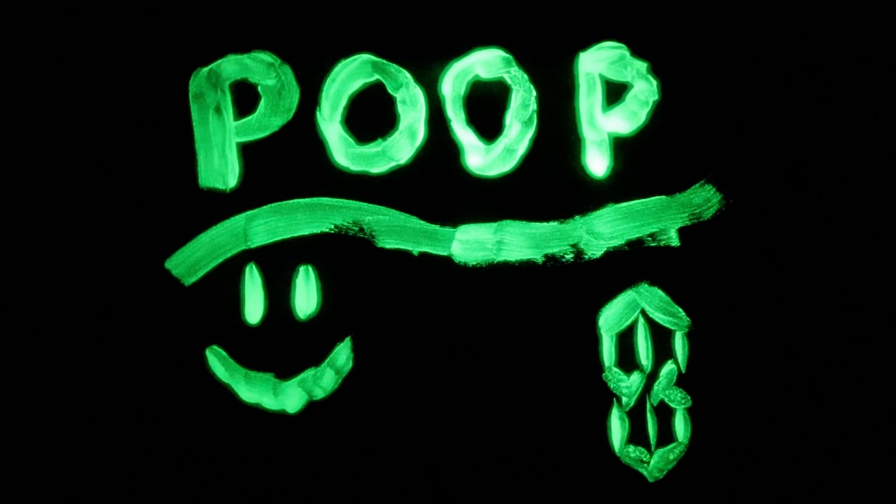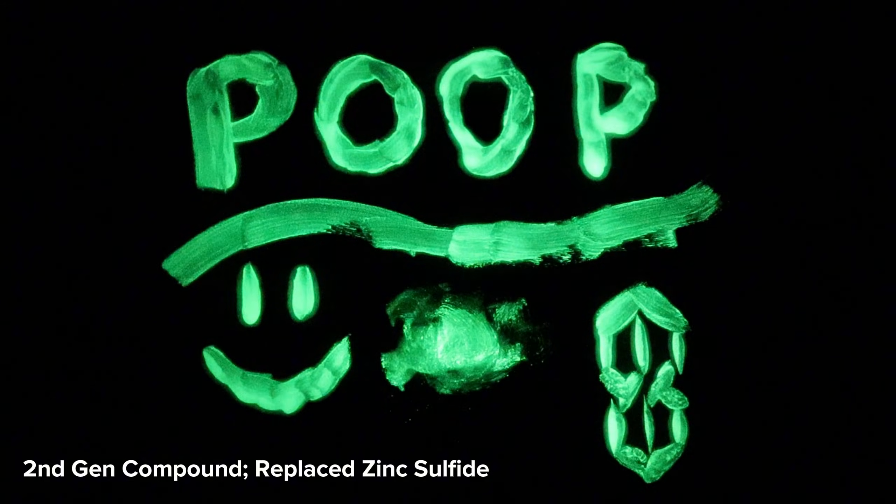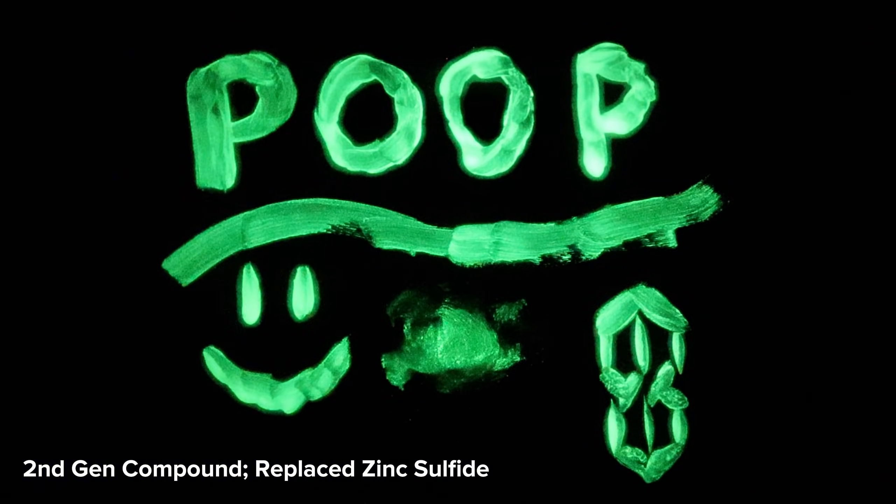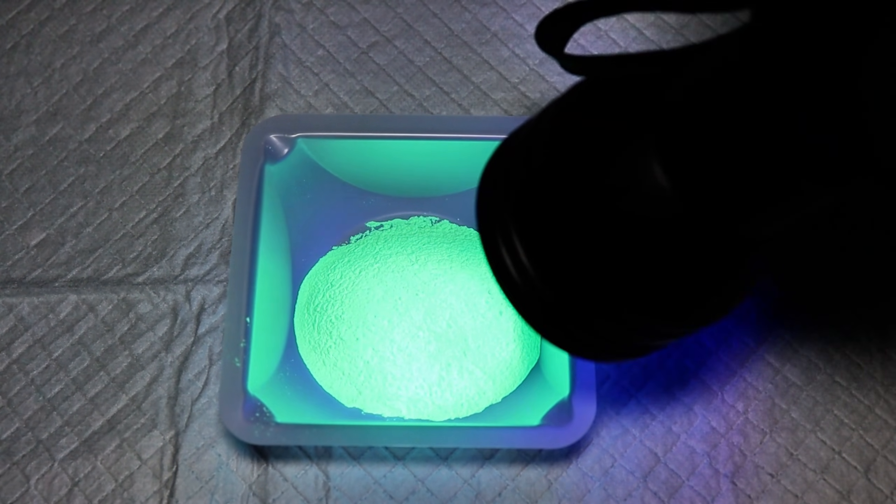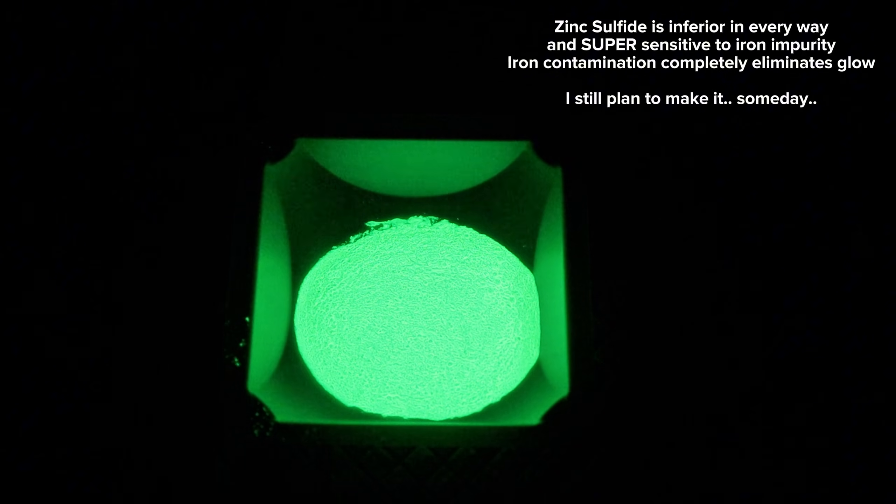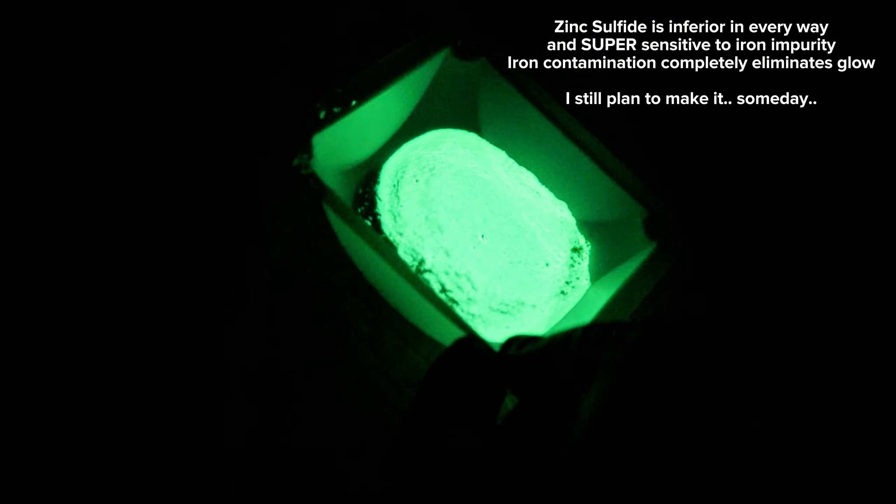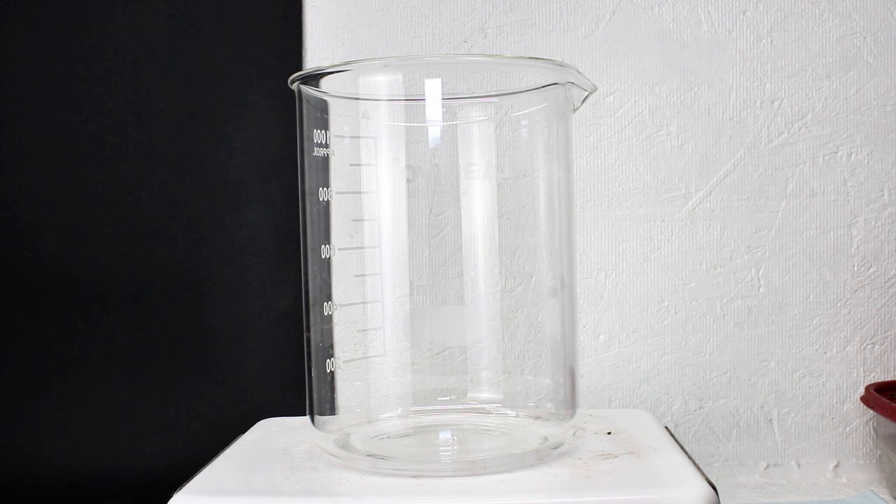Strontium aluminate is a second generation luminous compound and replaced the first generation zinc sulfide. Zinc sulfide doesn't glow nearly as long or intensely and it tends to wear out a lot faster than strontium aluminate. I've actually tried to make zinc sulfide a couple times as well, but the chemical is incredibly sensitive to iron impurities, which is a really tough thing for me to eliminate entirely in my lab.